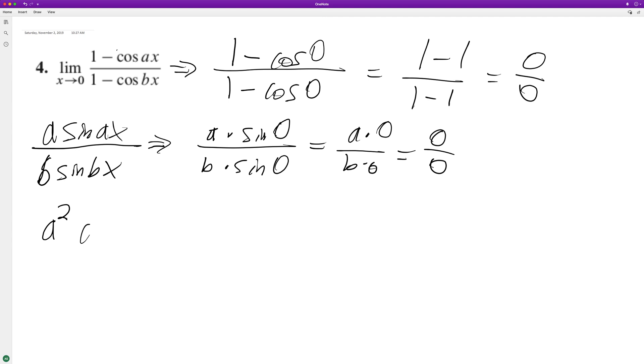And this turns to cosine ax over b squared sine—oops, sine cosine of bx.